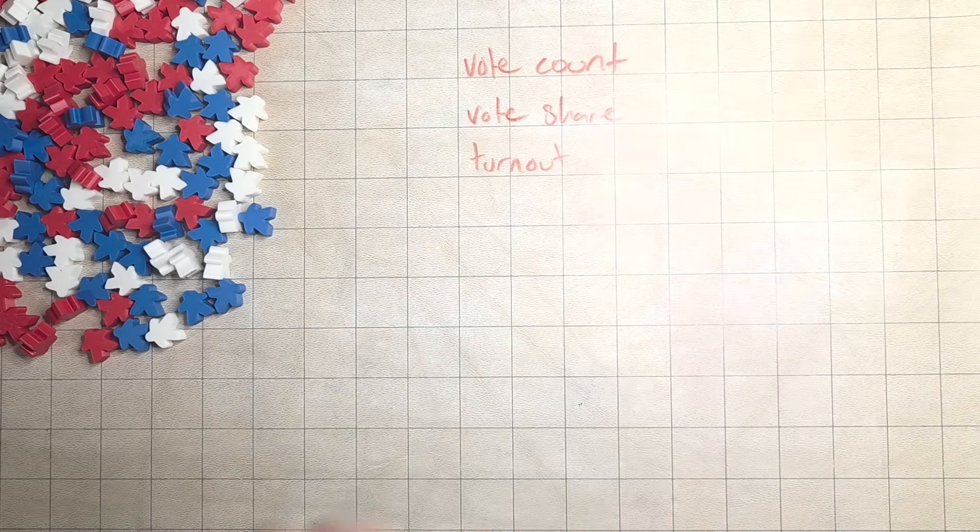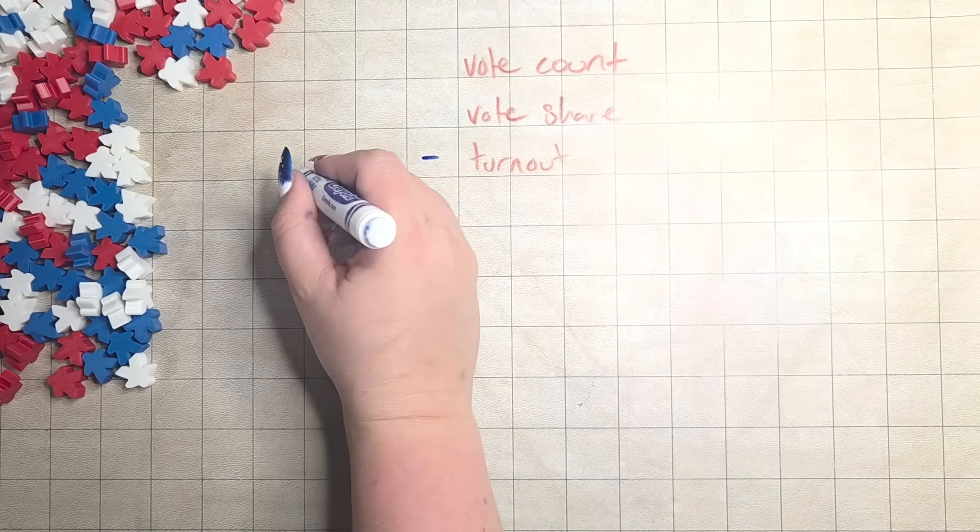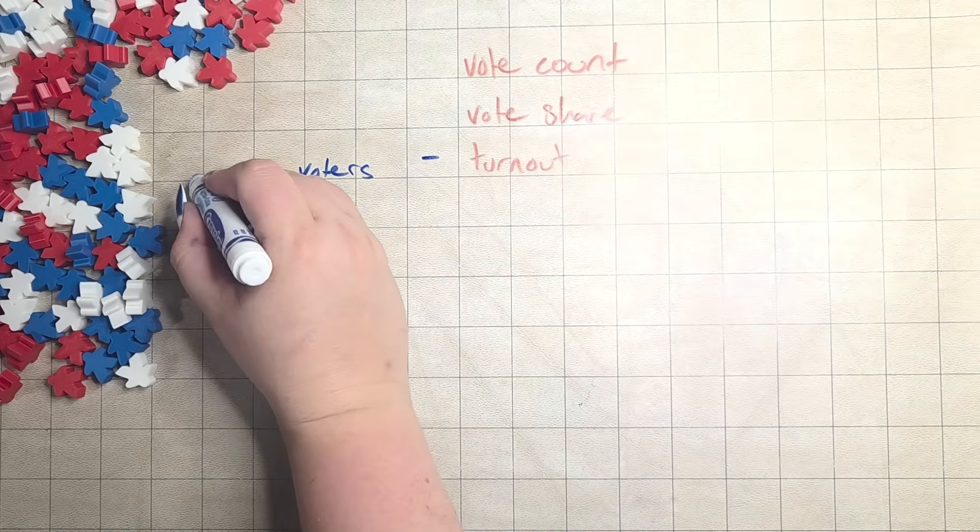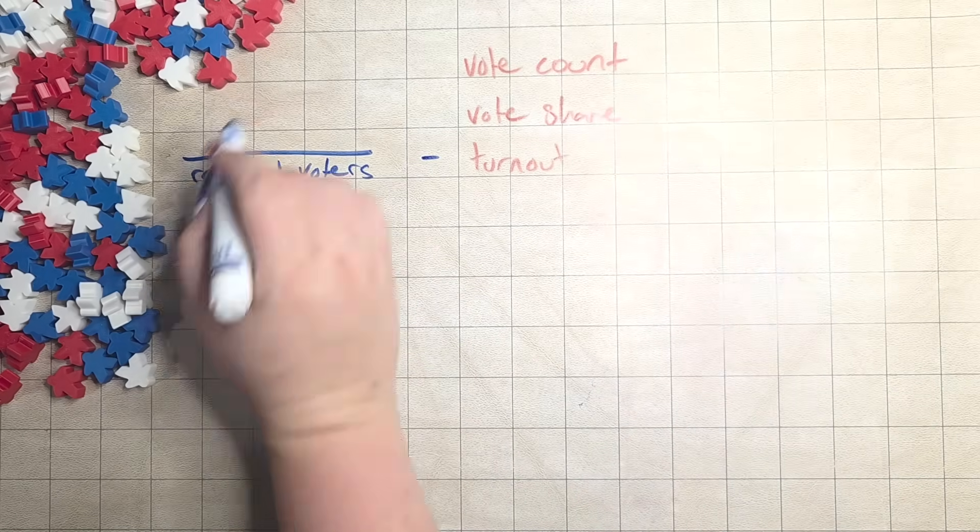To get turnout, you need a couple of things. You need to know the number of registered voters in the given region that you are looking at, and then you also need the number of ballots cast.